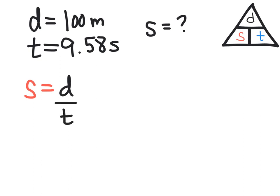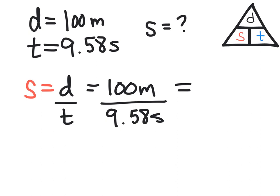Now we can substitute our variables. Distance equals 100 meters divided by time, which is 9.58 seconds. Now we can go ahead and do that calculation.